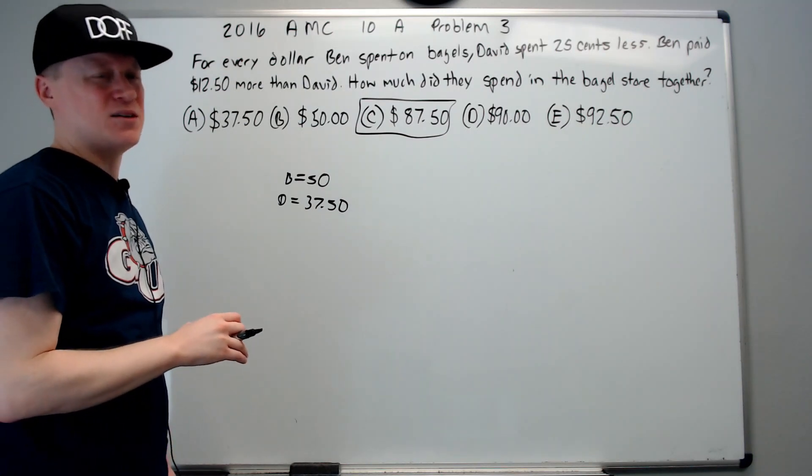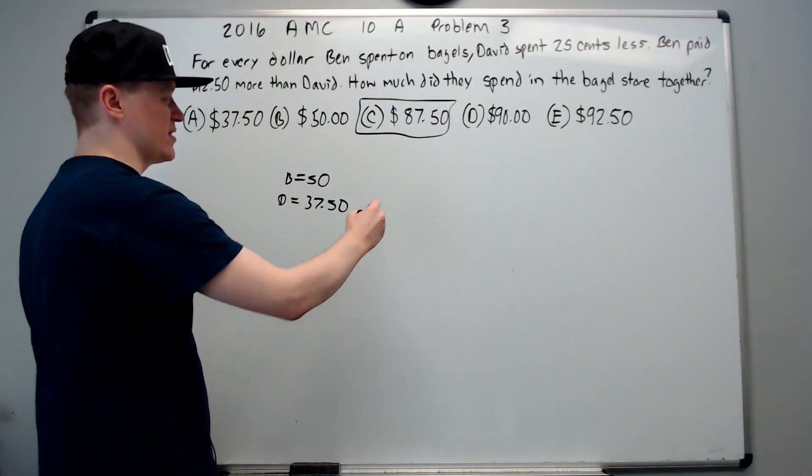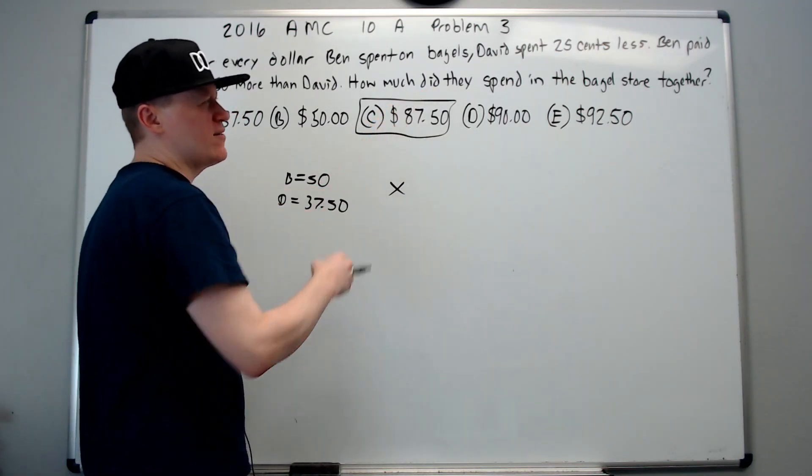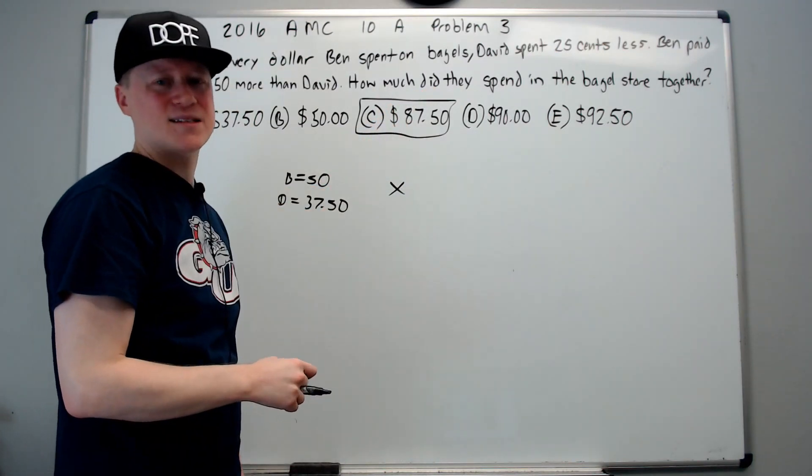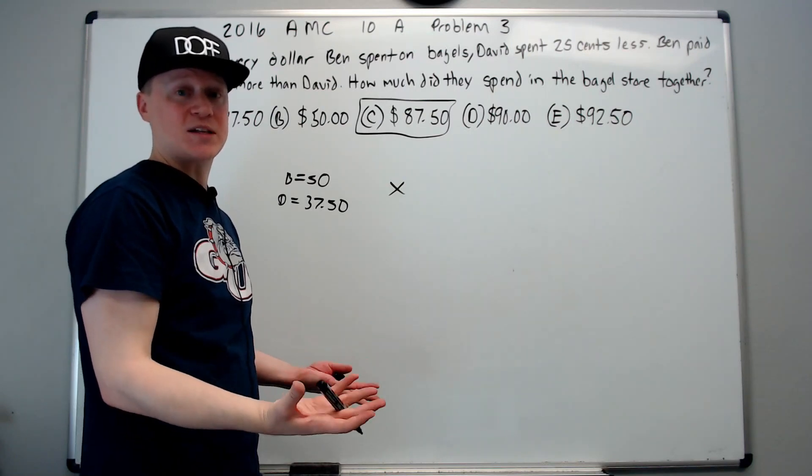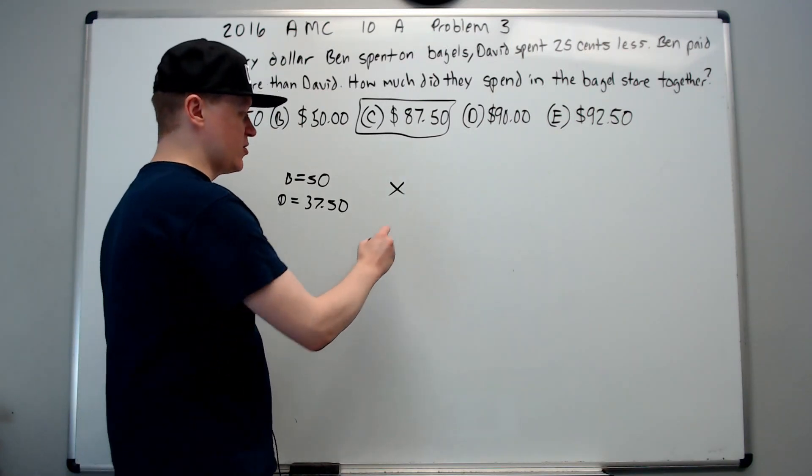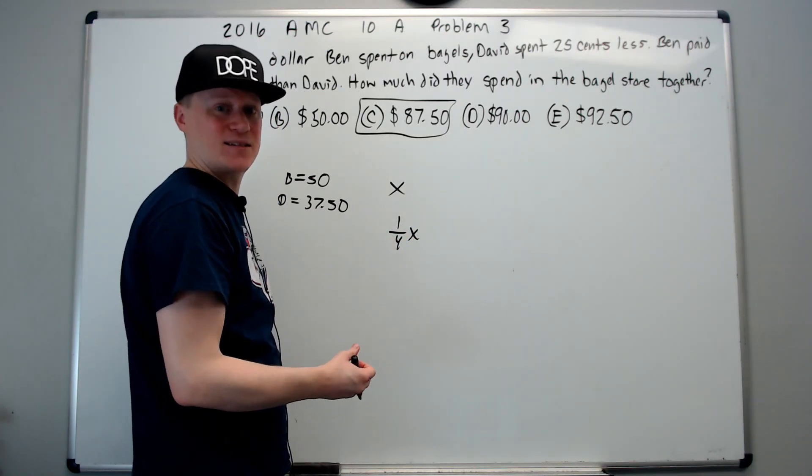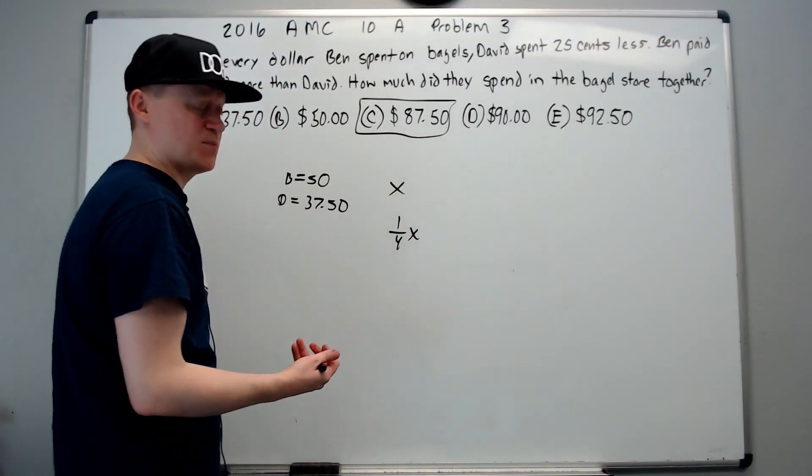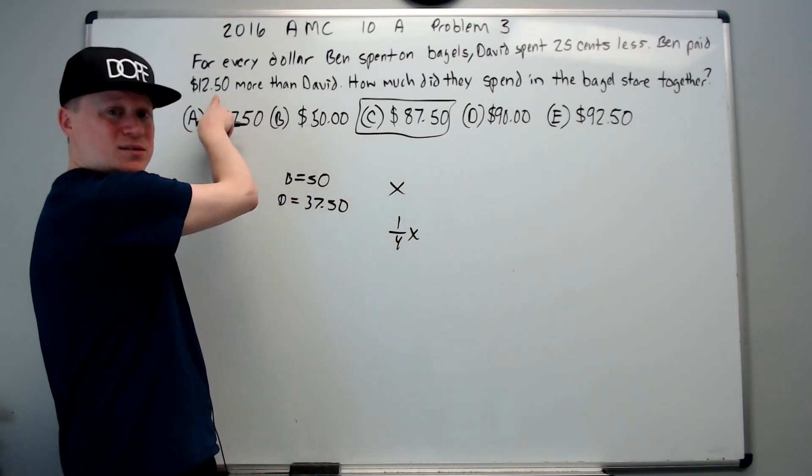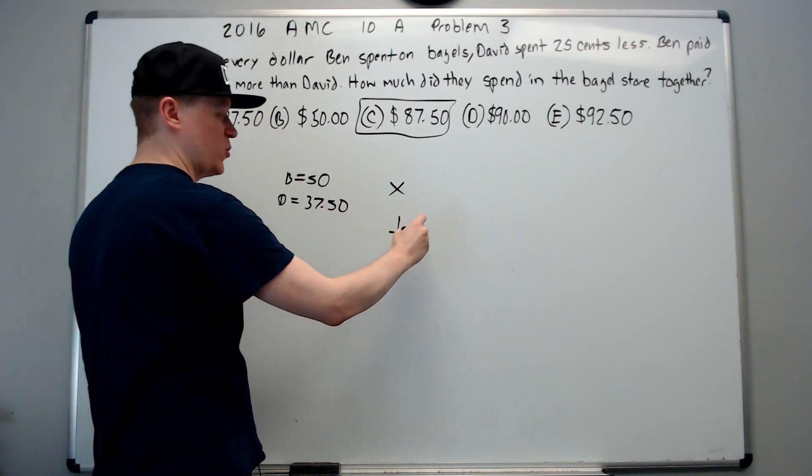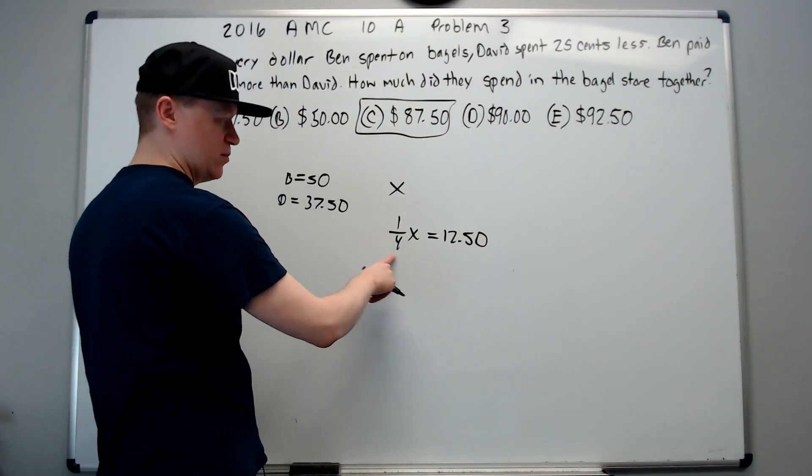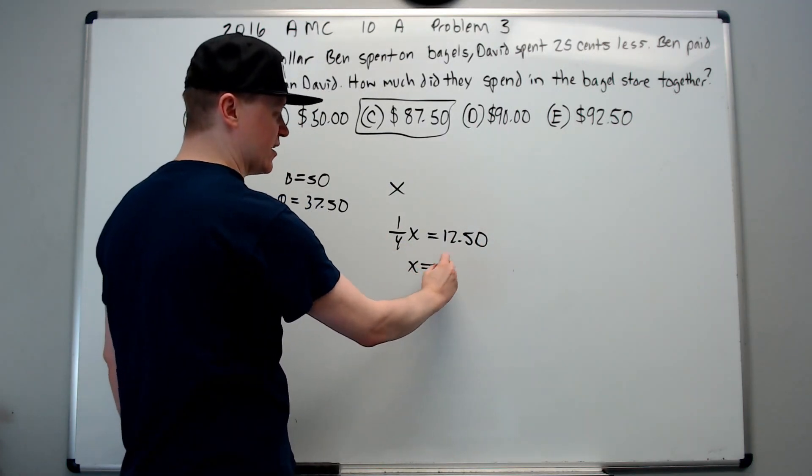The second way that you can do it is you can make it into an equation. Say Ben spent X dollars, and you have to think about it a little bit here too. If David spent $0.25 less, then he spent one-fourth of a dollar less. So he spent one-fourth of X less than what Ben spent. And this must be the amount that's equal to $12.50. So we can set this equal to $12.50. And you multiply by four to get X equals 50.